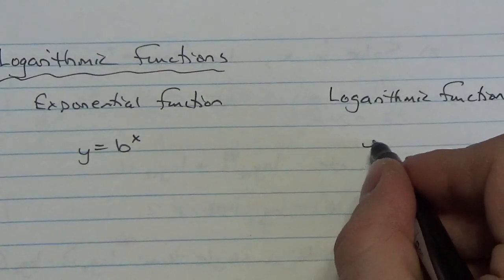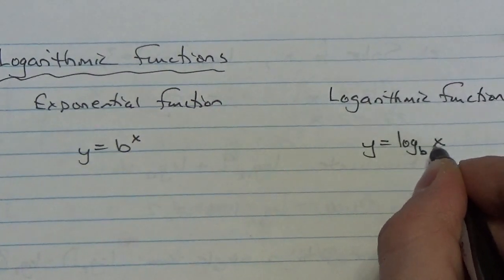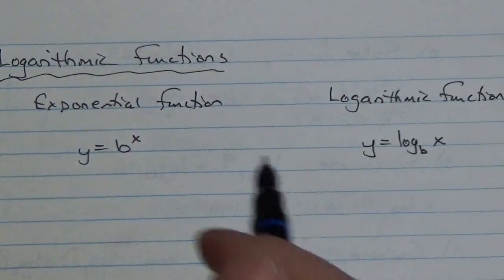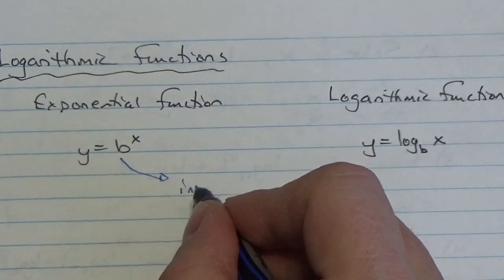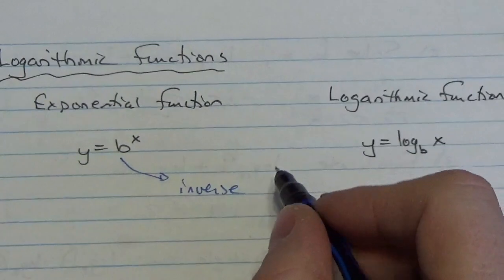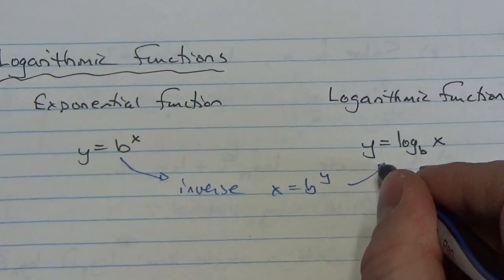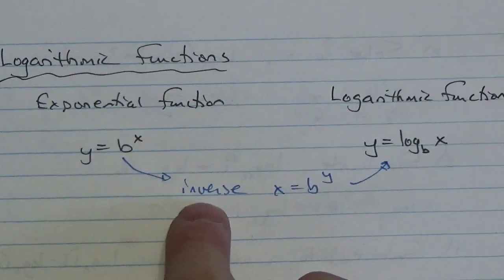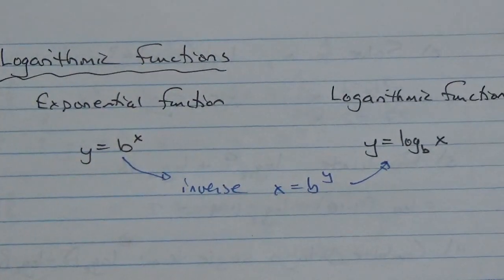That is going to be y is equal to the log base b of x. Remember how this works — remember the connection here. When we take and find the inverse, we get x is equal to b to the y, and then that becomes our logarithm. So the key thing is that the logarithmic function is the inverse of the exponential function.